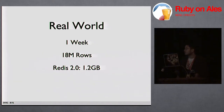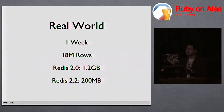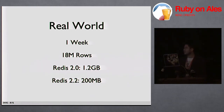Redis 2.2 was in beta at the time, and I ran the data through that — the in-memory footprint was just 200 megs. What happened was they added some crazy optimizations to Redis 2.2. If you're storing lists of numbers — which is exactly what I was doing — the way they encode the data in memory is a lot more efficient. I don't really understand how it works, but I'm pretty happy with the reduction in memory footprint.